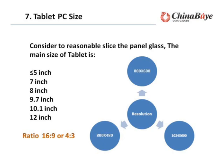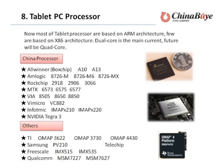The screen resolution comes in three main types. Most tablet processors are based on ARM architecture, while few are based on x86 architecture. Dual-core is the main current feature, with quad-core also available.